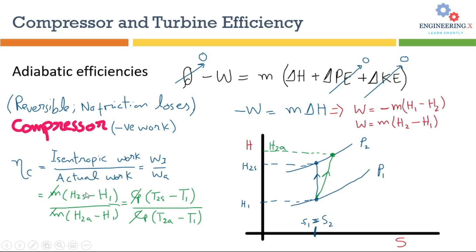But in reality, this doesn't happen. During compression, there are always some losses due to friction. So there is an increase in entropy during the compression process, and we follow this green compression path instead of the blue one. The respective point on the y-axis then gives you the actual amount of work.